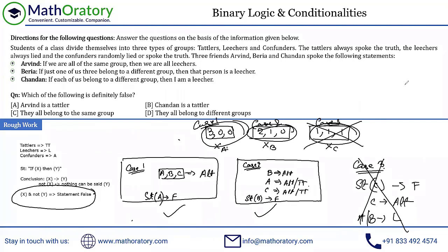Question 5 asks: which of the following is definitely false? Arvind is a Tatler — possible. Chandan is a Tatler — possible. They all belong to the same group — possible (that is case one). They all belong to different groups — not possible, since case three is invalid. So the answer is option D: they all belong to different groups.